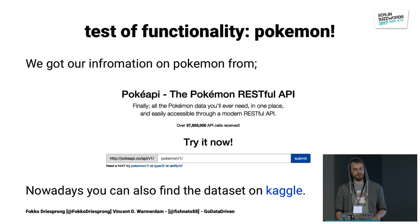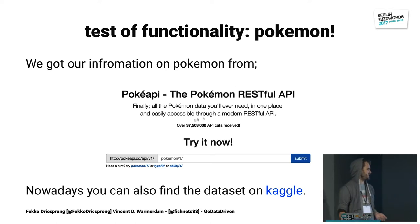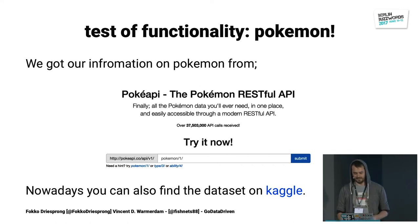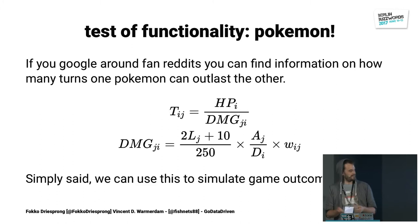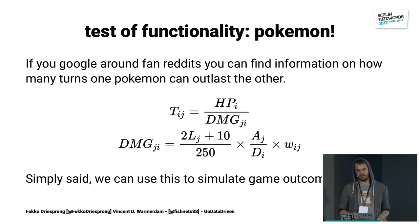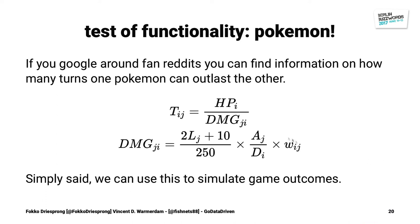There's a website called pokeapi.co — you can scrape the website, but nowadays it's easier to just download the dataset from Kaggle. With this dataset, you can go to fan websites to get the formula of how the Pokemon video game assigns damage from one Pokemon to another. The main thing I want to point out is I can actually simulate match outcomes with a few assumptions. I calculate the number of turns one Pokemon would last against another with basic attacks — a genuinely okay first-order approach to test if the algorithm works.